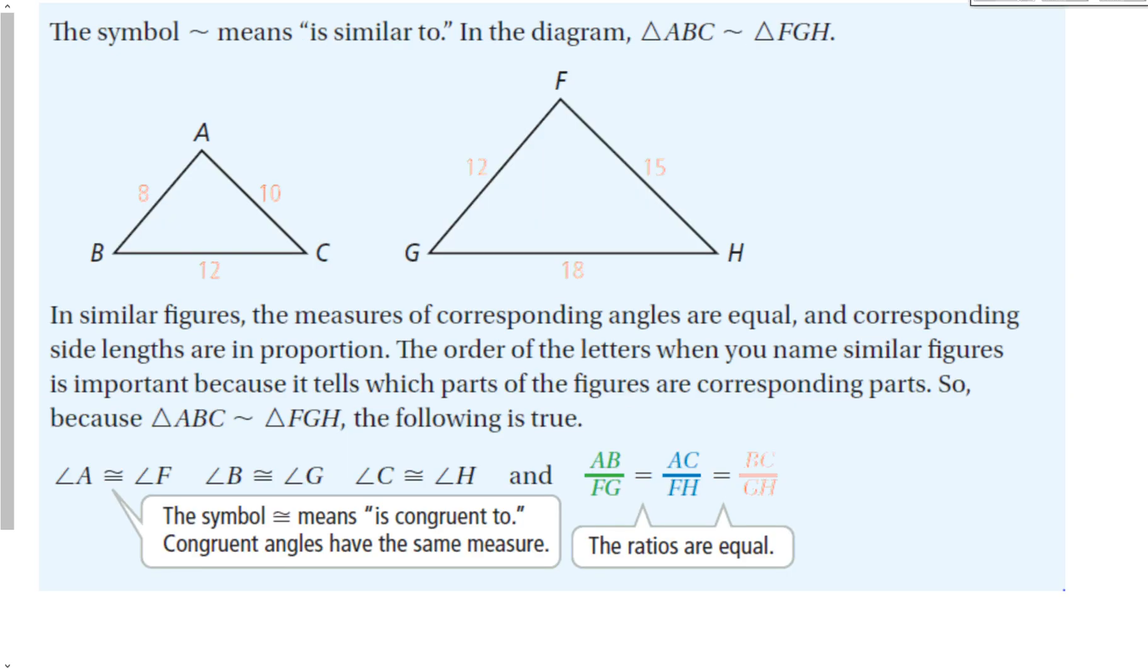Let's take a look at similar diagrams and similar figures. We have this symbol, a little squiggly line. That symbol means is similar to. So in the diagram, triangle ABC is similar to triangle FGH. It's important when naming geometric figures that both names go in the same direction. That means angle A is similar to angle F, angle B to G, and C to H. All the things should match up.